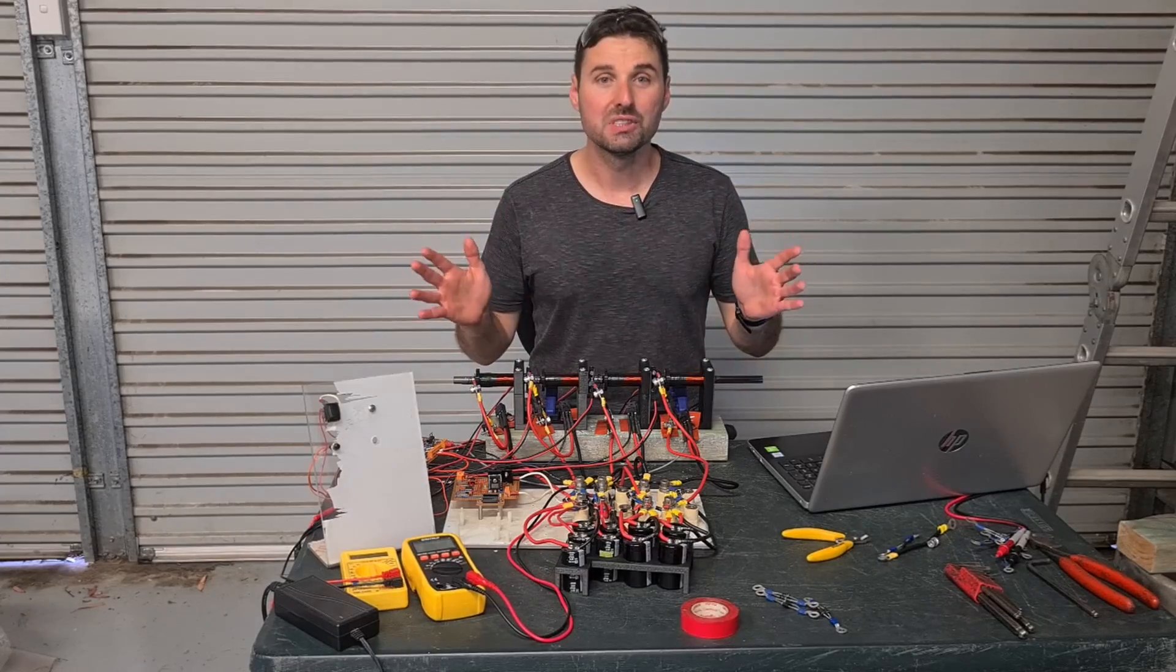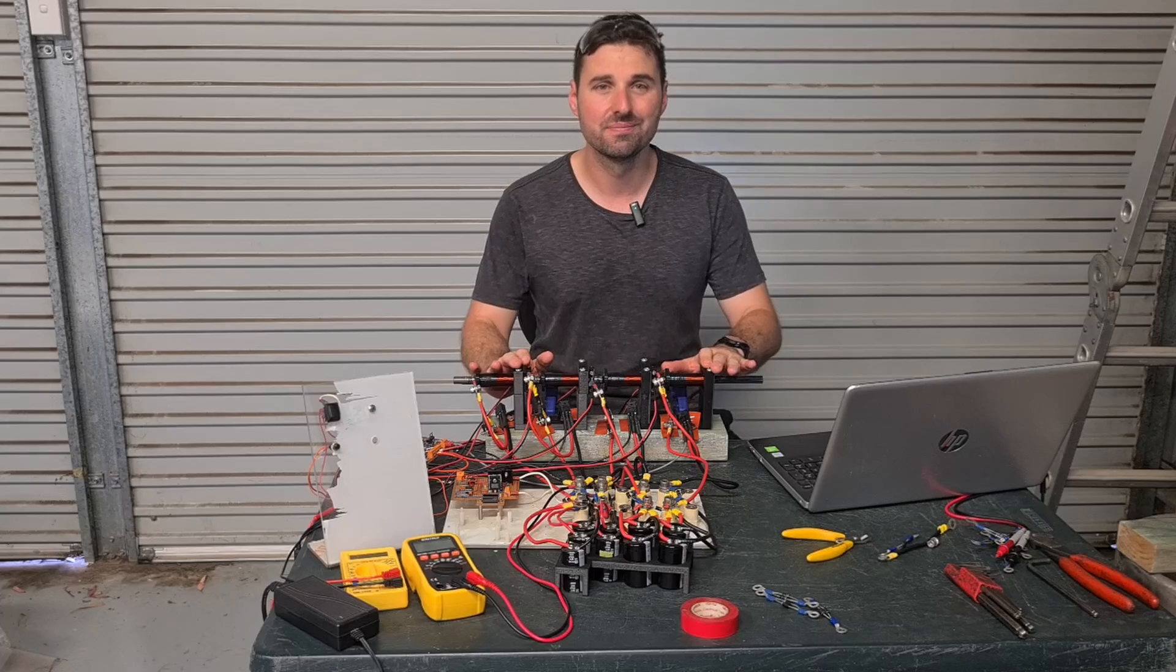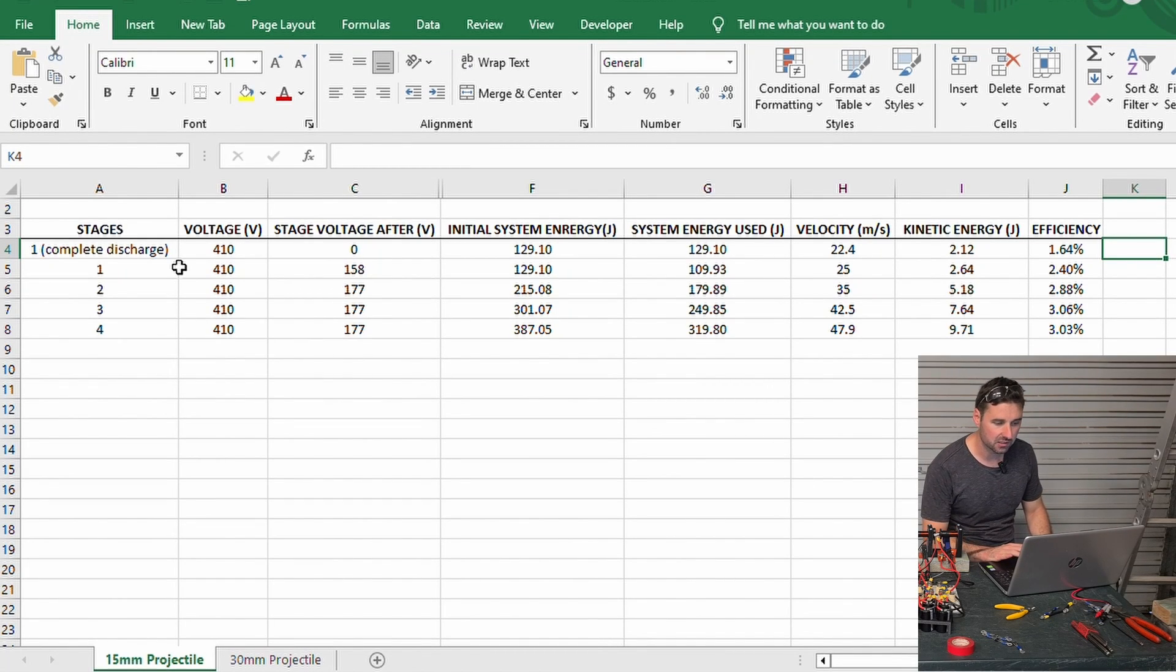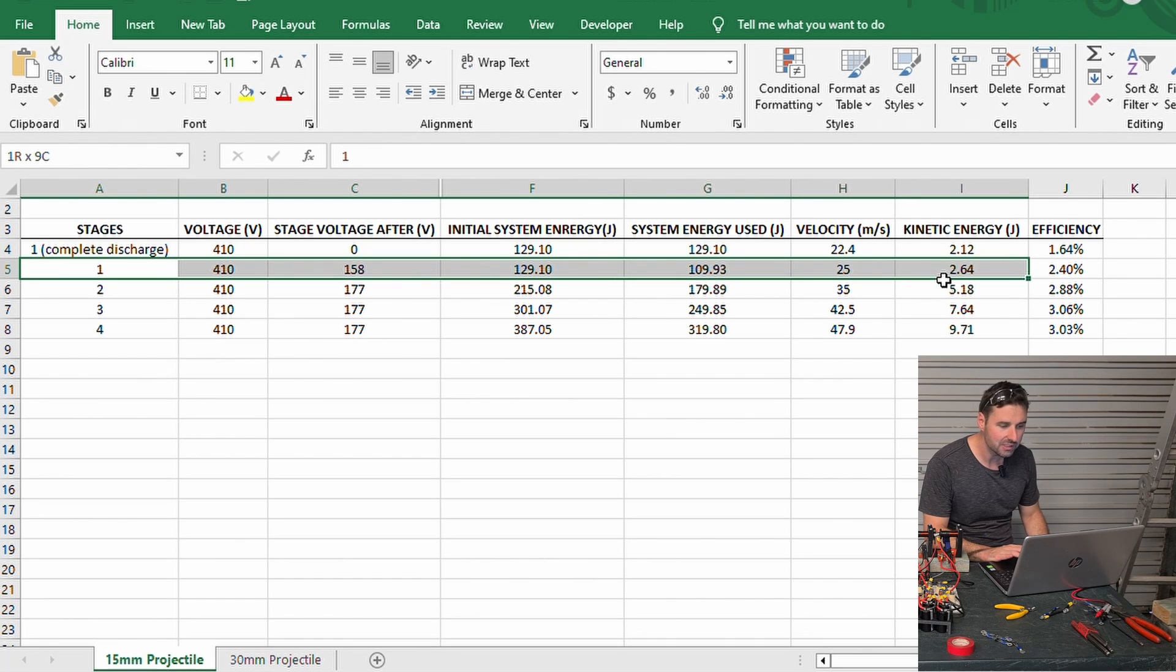Now to compare all the results. Starting with the 15 millimeter projectile, when adjusting the energized time of the first coil it increased the energy by 24.5 percent to 2.64 joules and the efficiency increased by 46 percent to 2.4 percent.